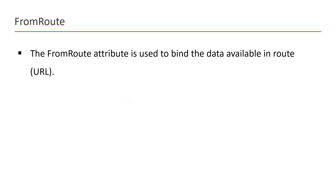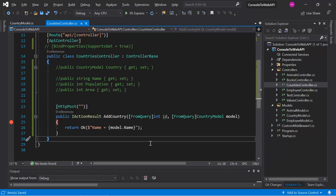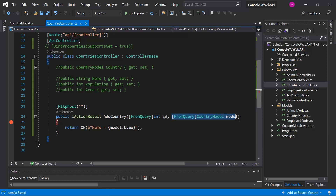The [FromRoute] attribute is used to bind data that is available in the route. Here is an example where we are passing dynamic data as part of the URL — not in the query string, but directly in the route. The key difference between [FromQuery] and [FromRoute] is that [FromQuery] works with the query string while [FromRoute] works only with route data.